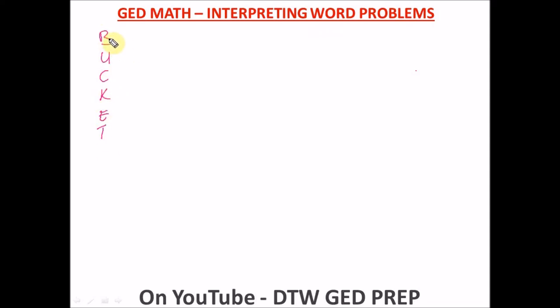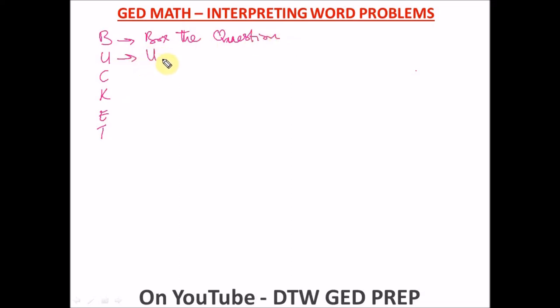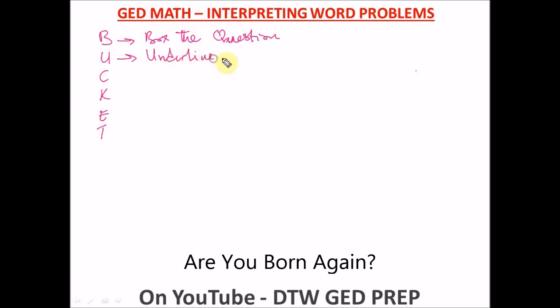Now, how do we interpret word problems with this acronym BUCKET? The first letter B means you box the question. In every word problem there is a question it asks you, so after reading you box it. The next letter U means you underline the information you need — the info needed.